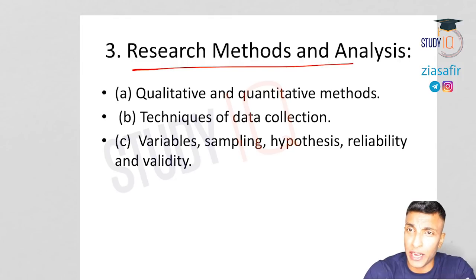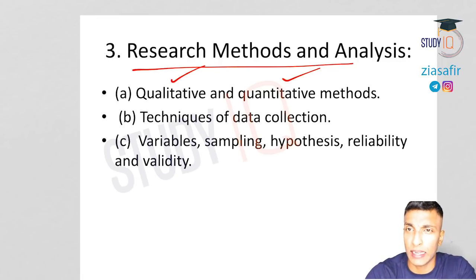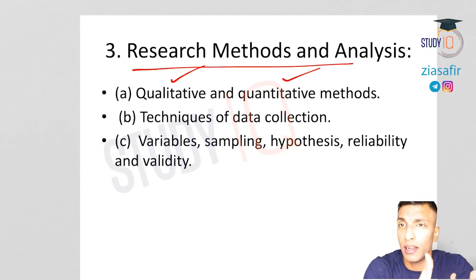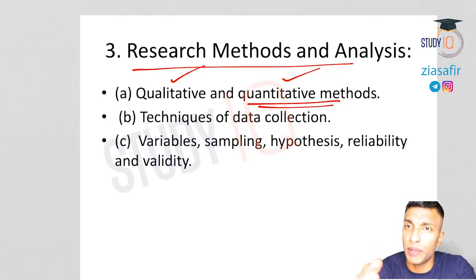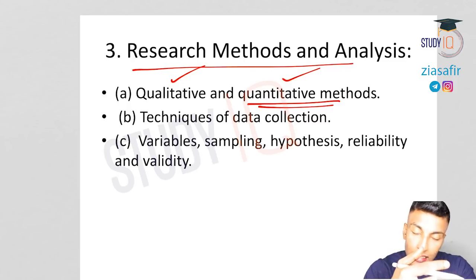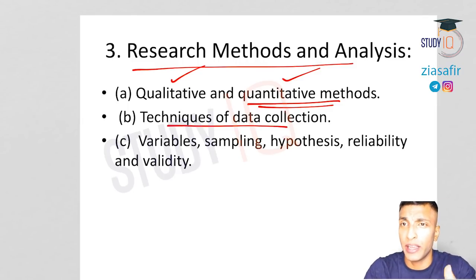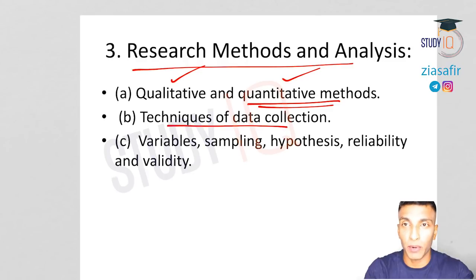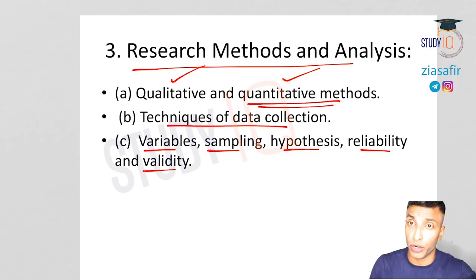Research methods and analysis is a somewhat dry topic. Qualitative methods are more suitable for social sciences like sociology, as the data is textual. Quantitative methods are better suited for natural sciences where data can be expressed in numbers. You cannot quantify emotions or anger, so qualitative methods are better for social science. Techniques of data collection include questionnaires, interviews, surveys, focus group discussions, and content analysis.